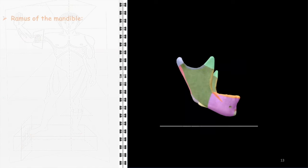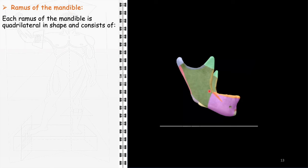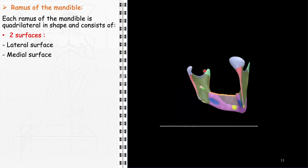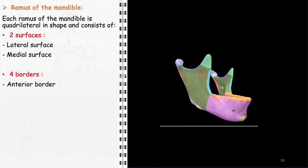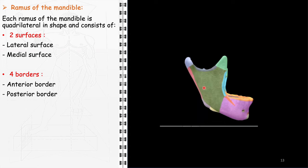Each ramus of the mandible, quadrilateral in shape, consists of two surfaces and four borders. The lateral surface, the outer side of the ramus, serves as an attachment area for various muscles, such as the masseter muscle. The medial surface, facing the interior of the mandible, includes the mandibular foramen, the entry point for the inferior alveolar nerve and vessels. The four borders of the ramus are: the anterior border, the forward edge of the ramus, provides attachment for the temporalis muscle; the posterior border, forming the back edge, leads up to the condylar process; the lower border constitutes the base of the ramus; and the upper border, the top edge, includes important anatomical landmarks such as the mandibular condyle and the coronoid process.